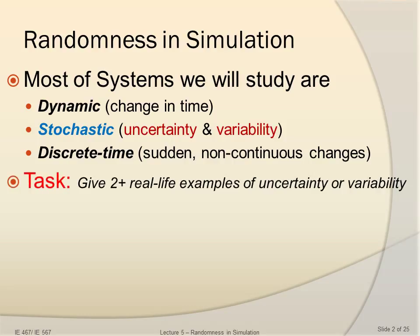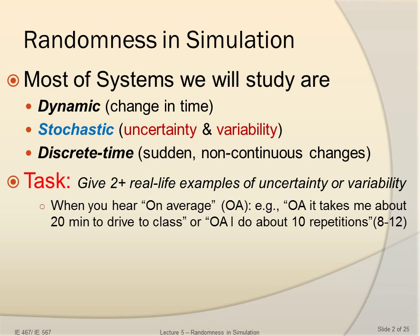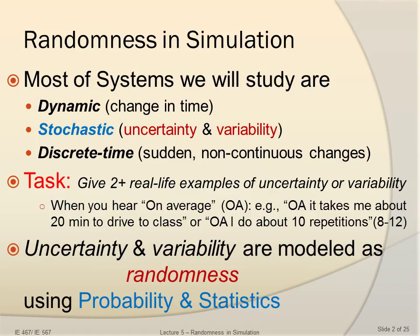Here is a task for you: please give at least two real-life examples of uncertainty or variability. Think about it for a second. Here is my example. When you hear 'on average' — for example, on average it takes me about 20 minutes to grade a class, or on average I do about 10 repetitions when I do some weightlifting in the gym, which really is anywhere between 8 and 12 — any time you hear 'on average,' it's one of the examples of uncertainty or variability.